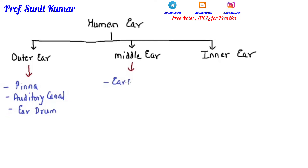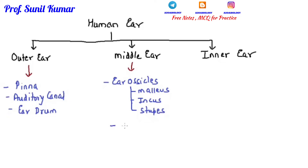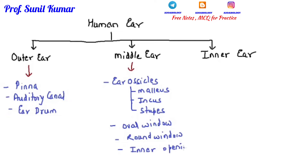The components of the middle ear include the ear ossicles, which are the smallest bones of our body. These include the malleus, incus, and stapes, where the stapes is the smallest among all three. Then there is the oval window, round window, and the inner eustachian tube. These are the components of the middle ear.